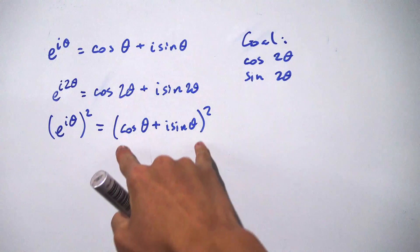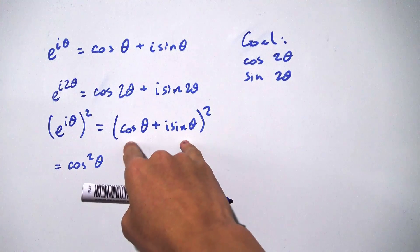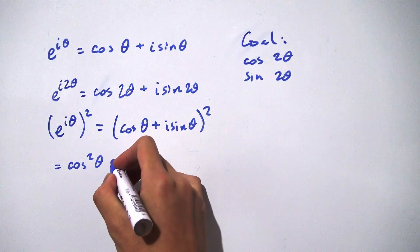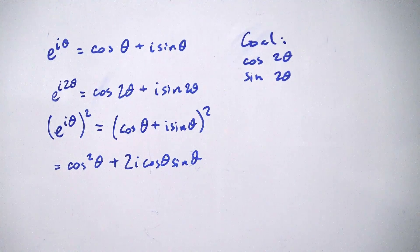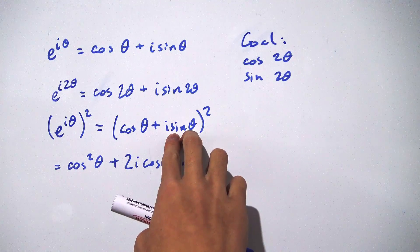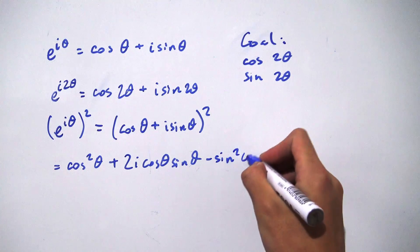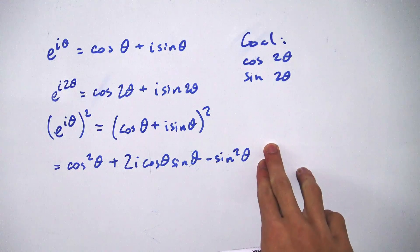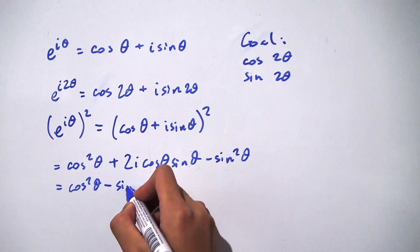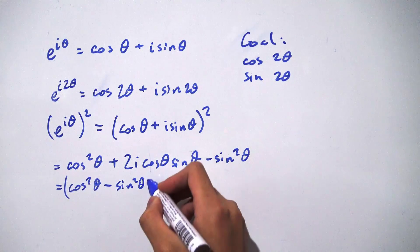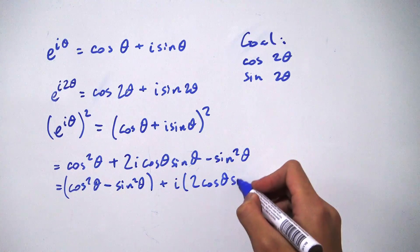Now all we need to do is expand this out. Using the binomial formula, we get cosine squared of θ, then plus 2i cosine of θ sine of θ, and then for the last part we have i squared, which is negative 1, so we get a negative sine squared of θ. Now let's group all the real parts and imaginary parts together. The real part is cosine squared of θ minus sine squared of θ, and taking out the i, the imaginary part is 2 cosine θ sine θ.